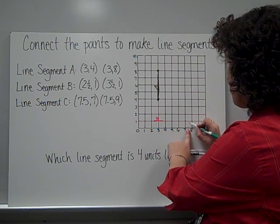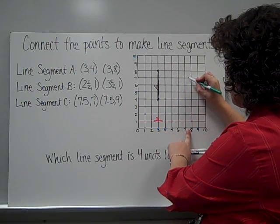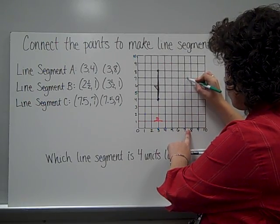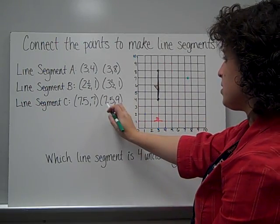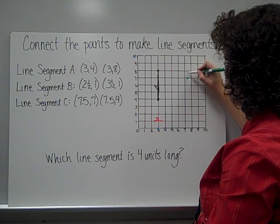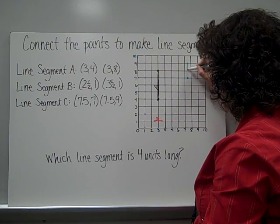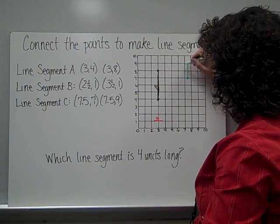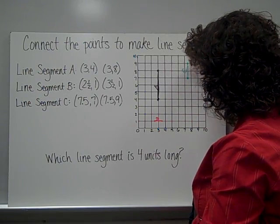Okay. So here's 7 and 1 half, but I need to get up to 7. This is going to be right here. And then 7 and 1 half, which is where I was, this time up to 9. So that would be from here to here. And this is line segment C.